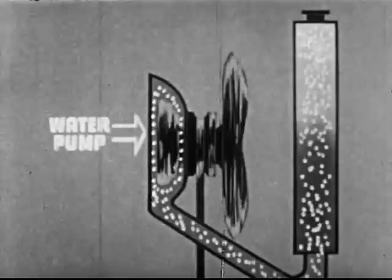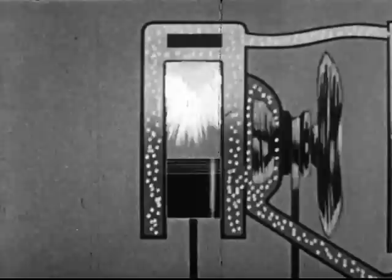Now when the engine of an automobile is running, it gets very hot — so hot that parts of it would melt if it were not cooled. To cool the engine, water is pumped through a jacket that surrounds the cylinders.